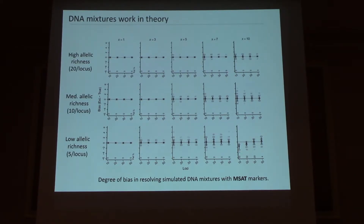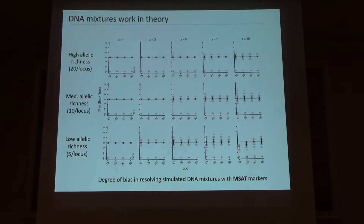I'm going to show you a few graphs. What we're doing is simulating mixtures, simulating genotypes from those mixtures, and then applying our estimator — standard statistical practice when developing a new estimator to make sure it's unbiased. These are bias plots: zero means we got the answer correct. On the x-axis are larger numbers of loci, simulated from microsatellite-type markers with many alleles. When we simulate mixtures with a single individual, we get it correct every single time. We can go all the way up to ten individuals, and with high to moderate allelic richness — 10 to 20 alleles per locus — we can resolve mixtures very accurately with 20 to 50 microsatellite panels, which is becoming standard practice.